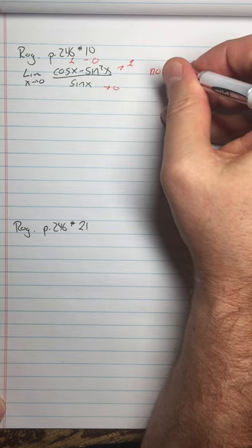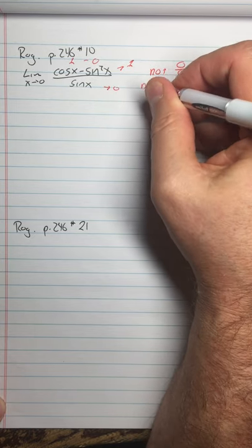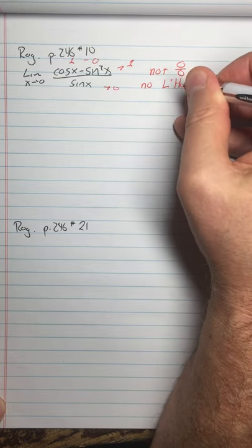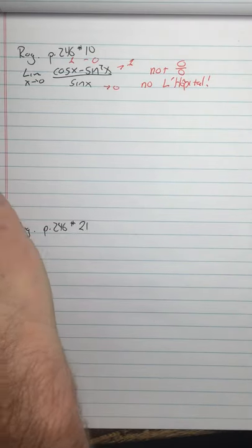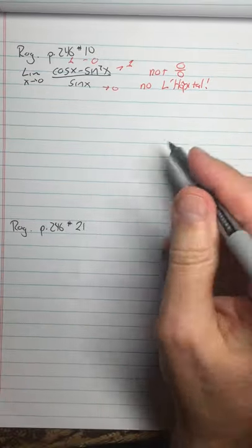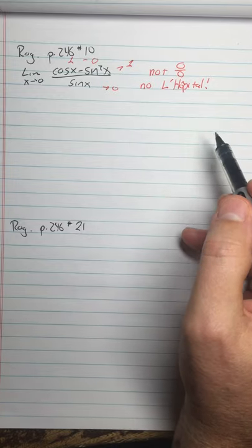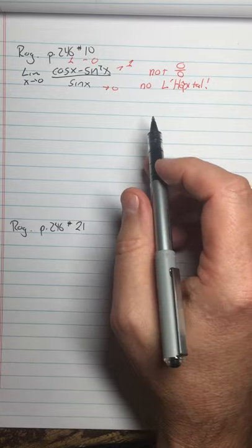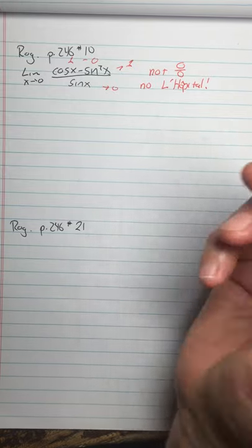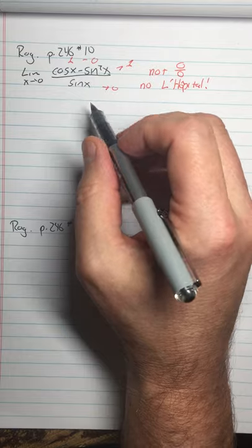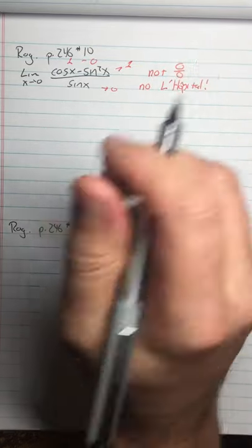The bottom is going to approach 0. That's not a 0 over 0 form. We cannot l'hôpital this. This is a no-lope problem. No-l'hôpital. The technical way to say that is l'hôpital's rule does not apply. So if you just say no l'hôpital and sound a little bit like Adam Sandler, it's not going to fly. But it's late. What can I say?